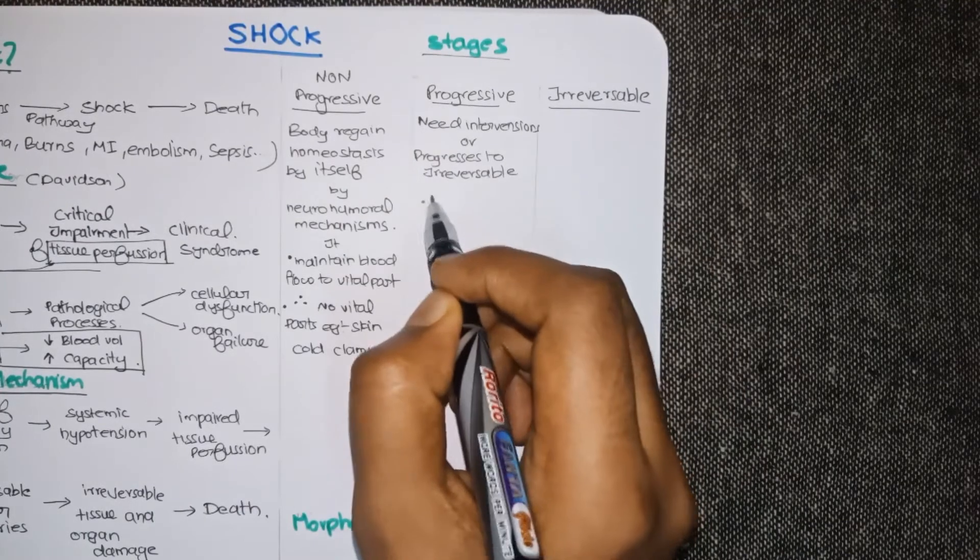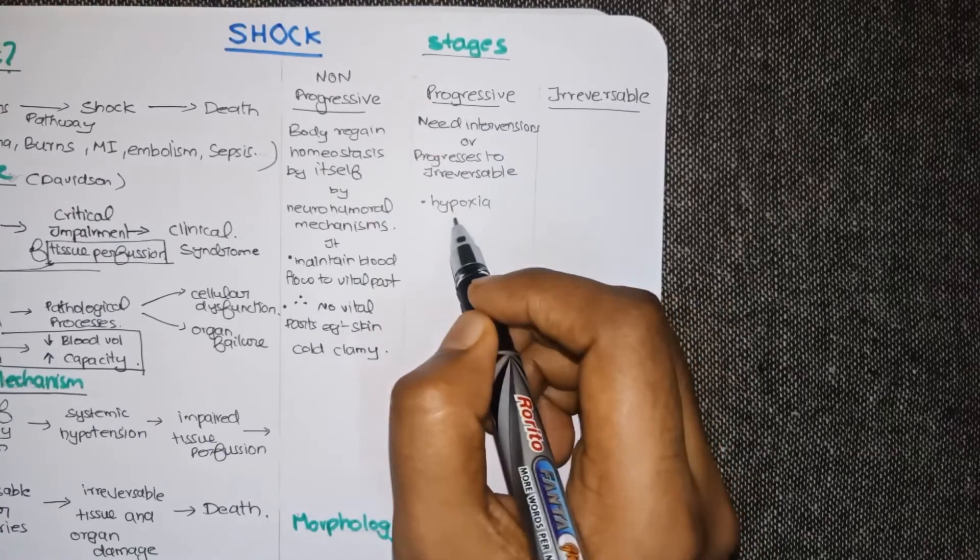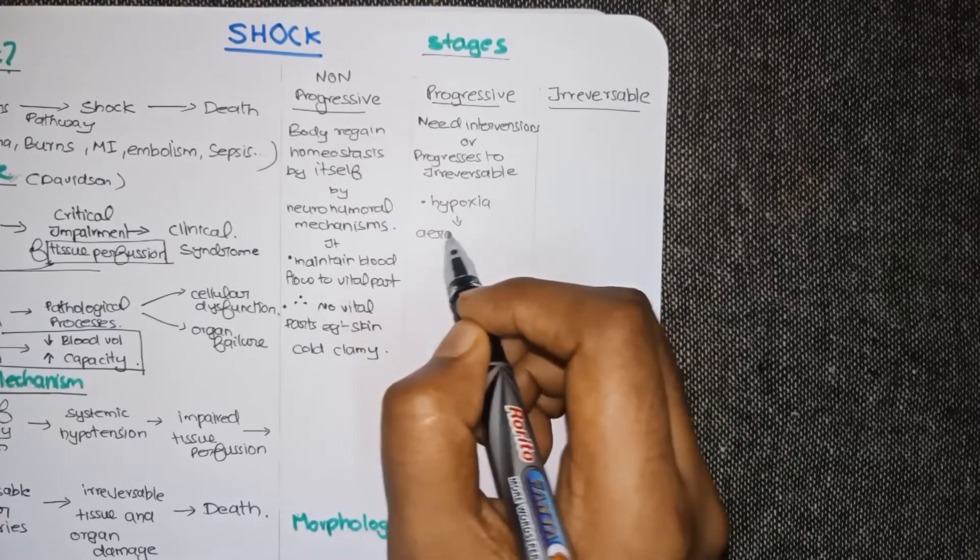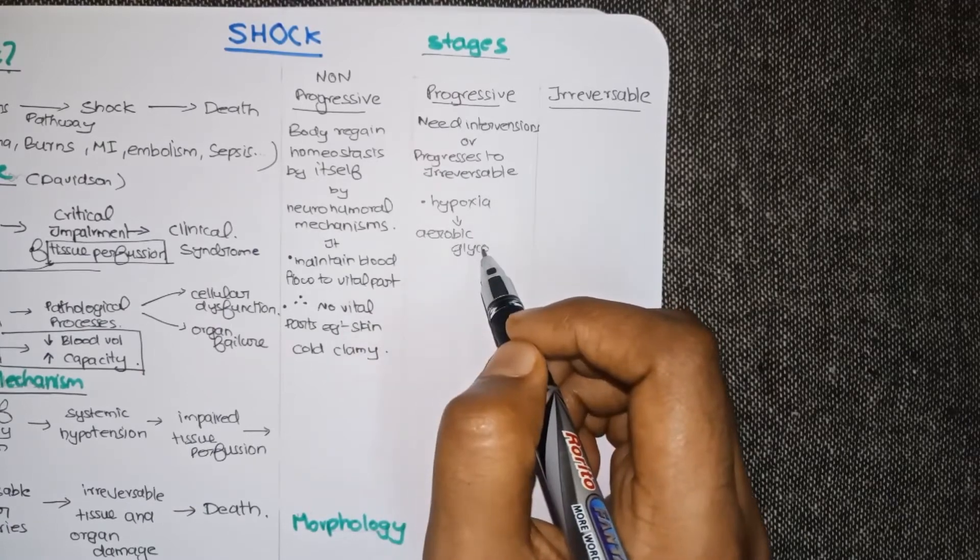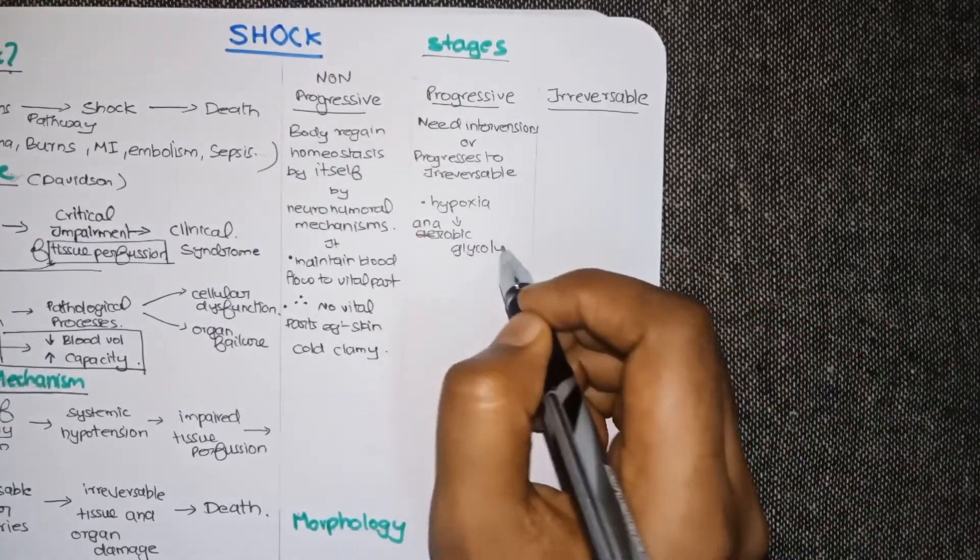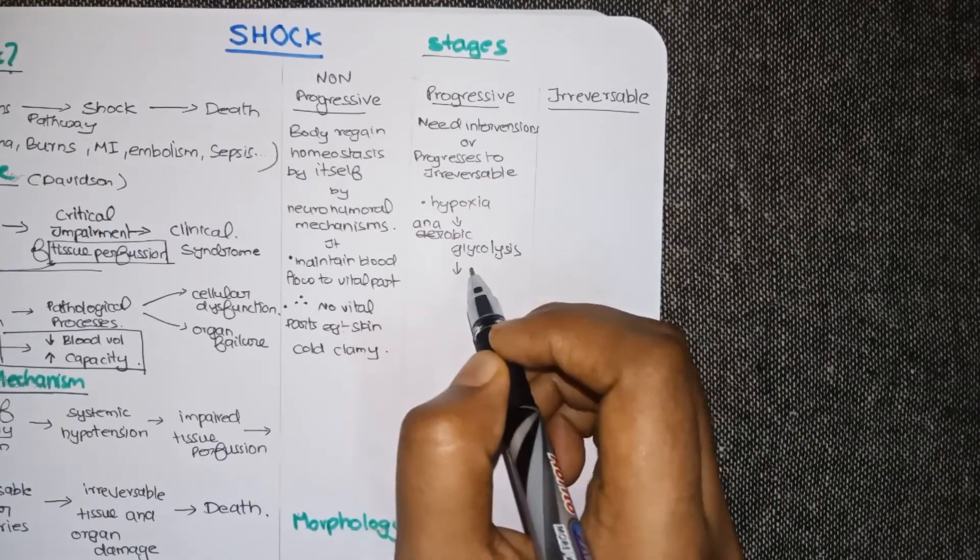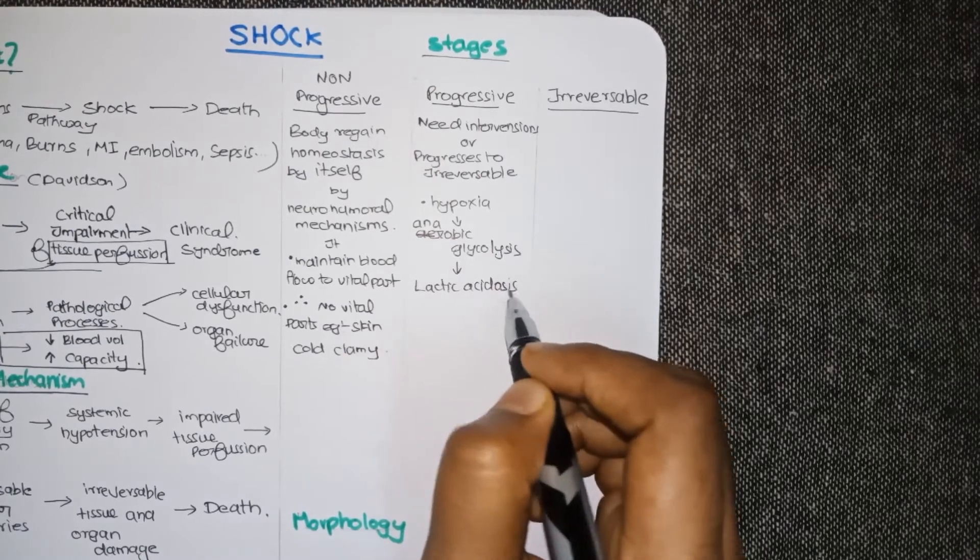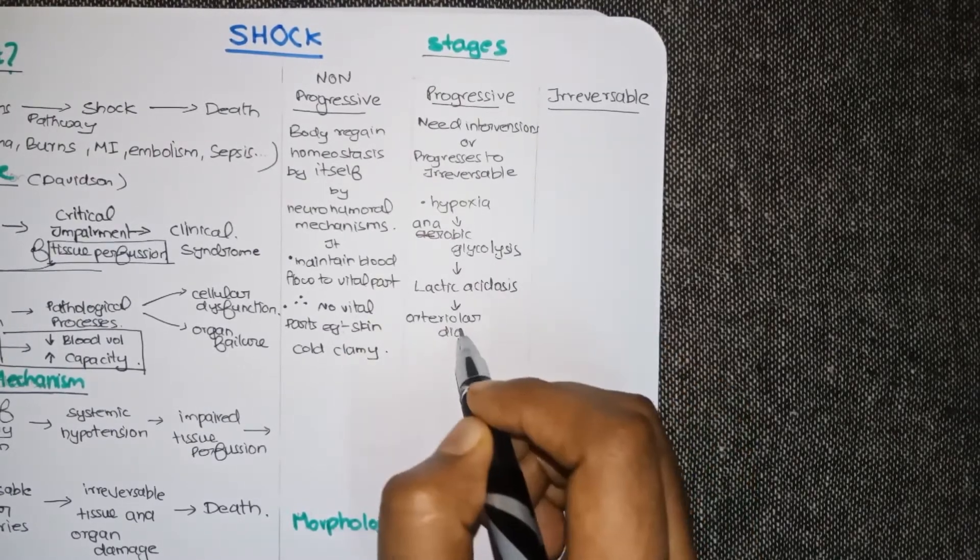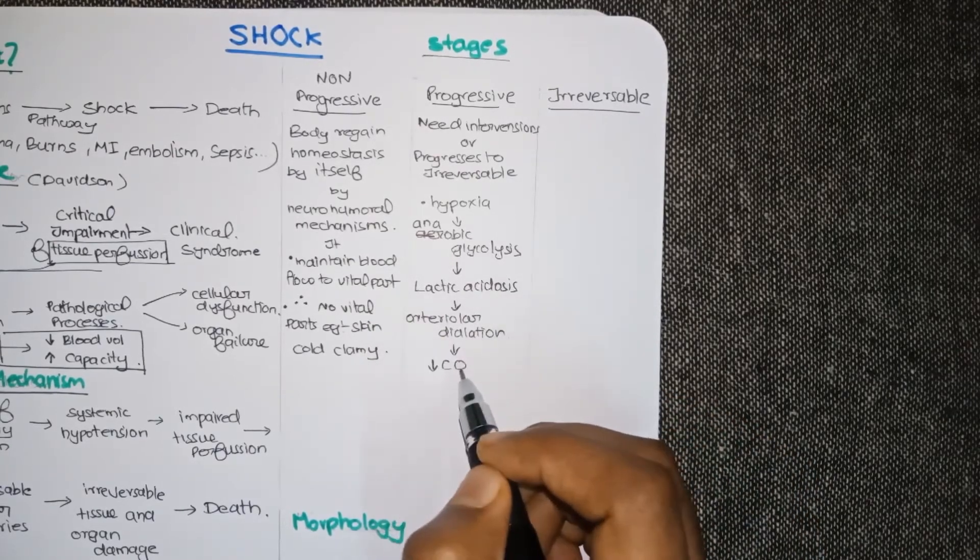So why is this progressive? At this stage hypoxia or a condition of decreased oxygen sets in. This results in anaerobic glycolysis. The end product of anaerobic glycolysis is lactic acid and that causes lactic acidosis. That in turn causes arterial dilation. All this causes a decrease in cardiac output.